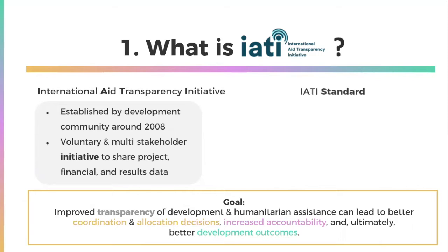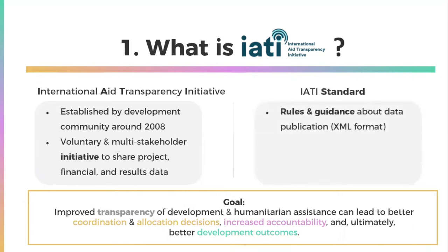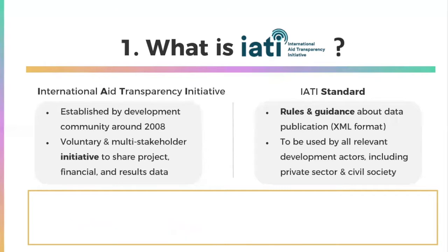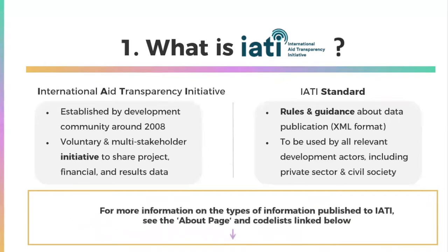IATI is also a global data standard. The IATI standard is a set of rules and guidance about what data organizations should publish and in what format. The IATI standard acts as a framework and XML format, and is intended to be used by all relevant development actors, including the private sector and civil society organizations, to promote sharing of useful information on their development and humanitarian funding. For more details on the types of information published to IATI, see the IATI About page and code lists linked in the video description below.